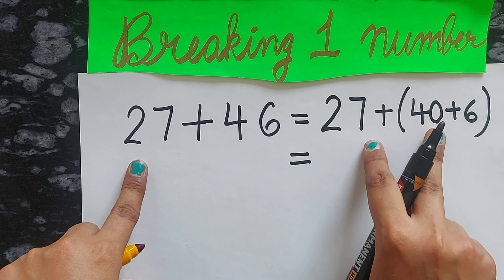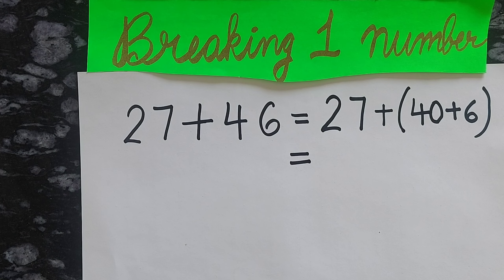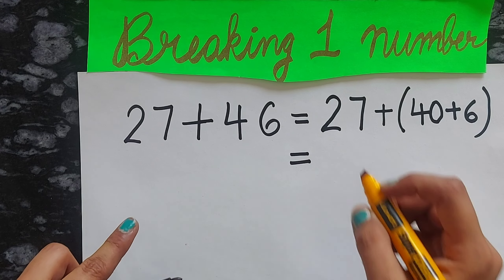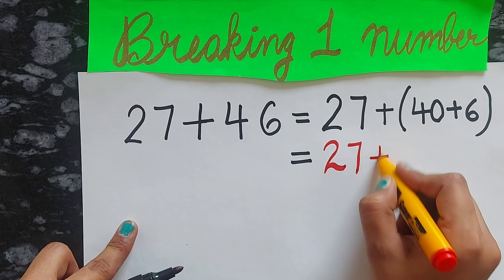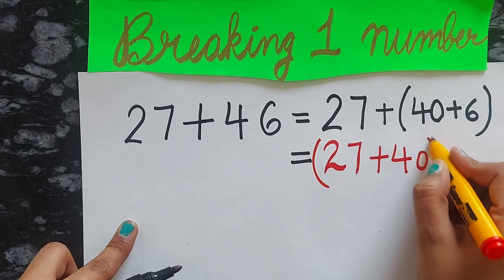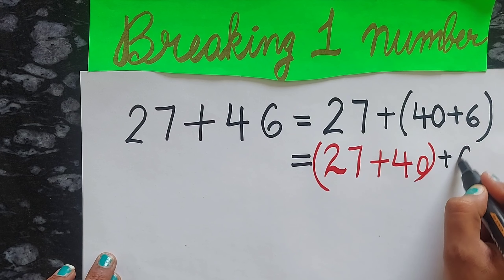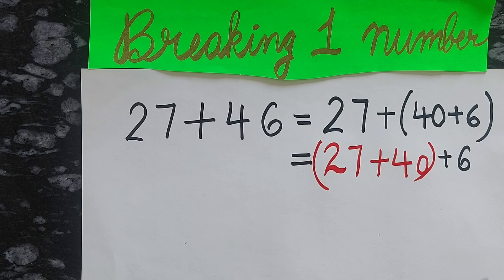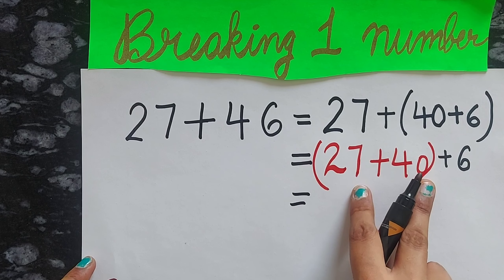In the next line, you will choose the bigger number. There are two numbers: 27 and 40. Keep the bigger number and the smaller number together in a bracket. Then in the next line we will add these two numbers.